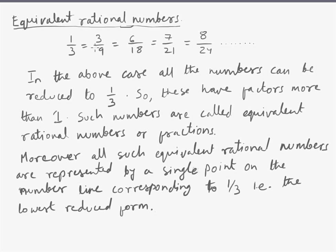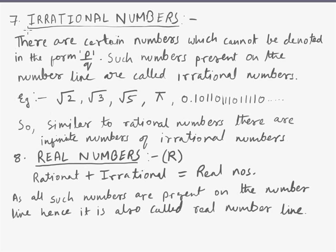Further, rational numbers are also called equivalent rational numbers. Example: 1 by 3, which is equal to 3 by 9, 6 by 18, and infinitely it goes on. So all the further fractions can be reduced to this base form 1 by 3. So these have factors more than 1. Such numbers are called equivalent rational numbers or fractions. Moreover, all such equivalent rational numbers are represented by a single point on the number line corresponding to 1 by 3, that is the lowest reduced form.